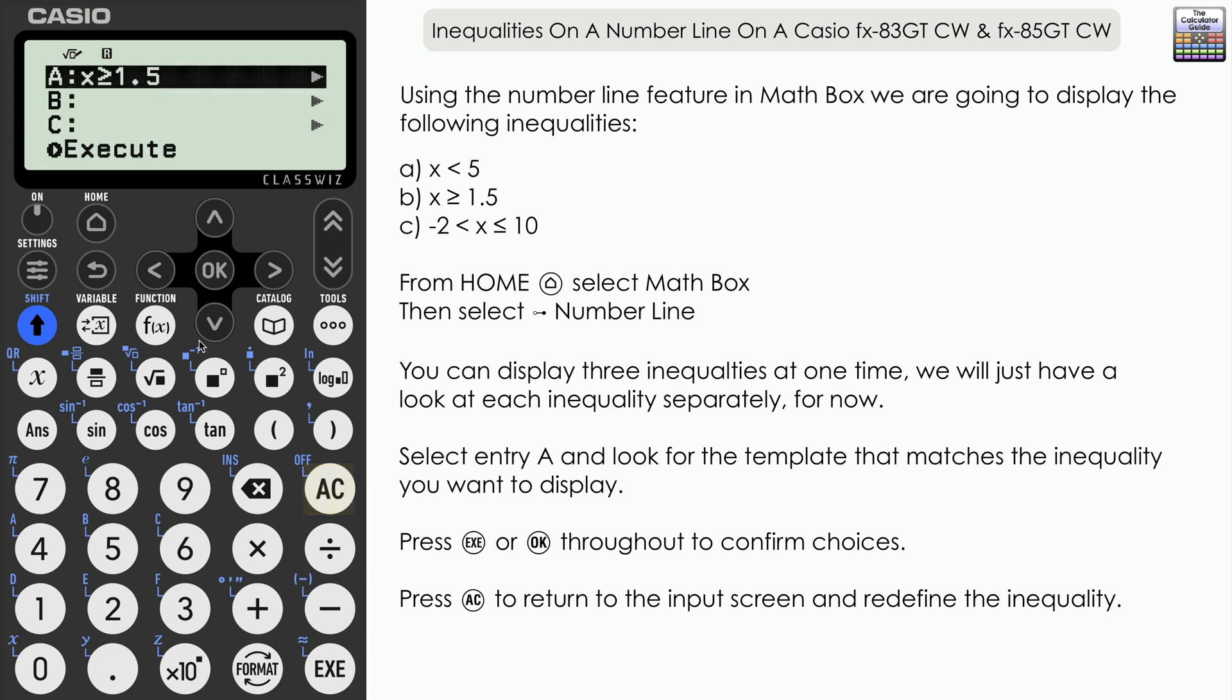Scroll down to find the right template that we can use. It's this one here. And this time we've got a lower limit and an upper limit. It must be strictly greater than A but less than or equal to B. So our lower limit there is negative 2 and the upper limit there is 10.